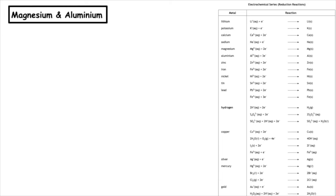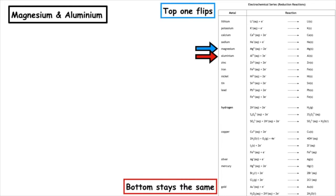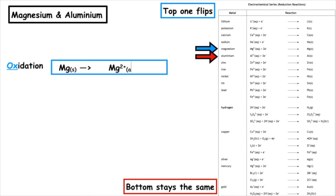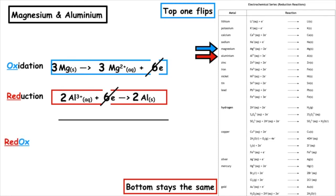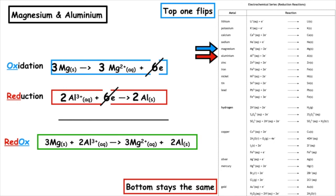Let's take magnesium and aluminium. Identify their positions in the electrochemical series — top one flips (oxidation), bottom one stays the same (reduction). The oxidation has two electrons and the reduction has three. To match them, multiply the oxidation by three: 3Mg(s) → 3Mg²⁺ + 6e⁻. Multiply the reduction by two: 2Al³⁺(aq) + 6e⁻ → 2Al(s). Cancel the electrons and write the overall redox: 3Mg(s) + 2Al³⁺(aq) → 3Mg²⁺(aq) + 2Al(s).